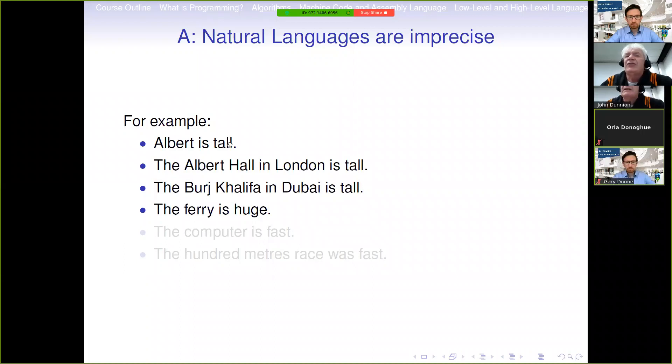So this whole notion of tall is very imprecise and can lead to a lot of confusion if we use it in conversation. Similarly, the ferry is huge. It all depends whether it's a ferry from Burtonport to Ironmoor in Donegal or from Baltimore to Sherkin or Clear in Cork, or whether it's the ferry that goes from Dublin to France or from Cork to France. The computer is fast: a computer that's fast 20 years ago wouldn't be considered fast nowadays. And the hundred metres race was fast depends on whether this hundred metres is being run at the Olympics or it's a hundred metres being run by Albert from baby infants.